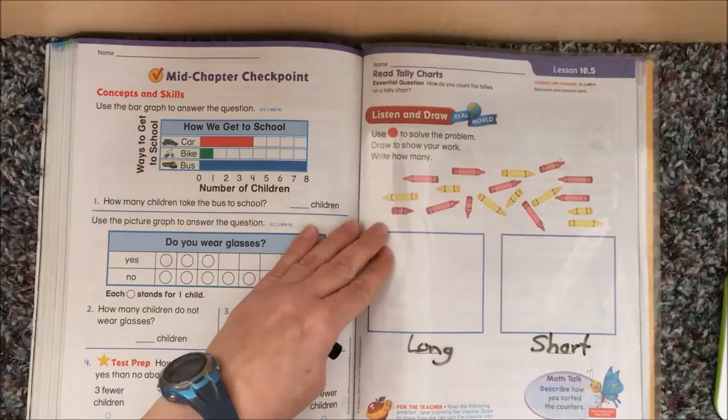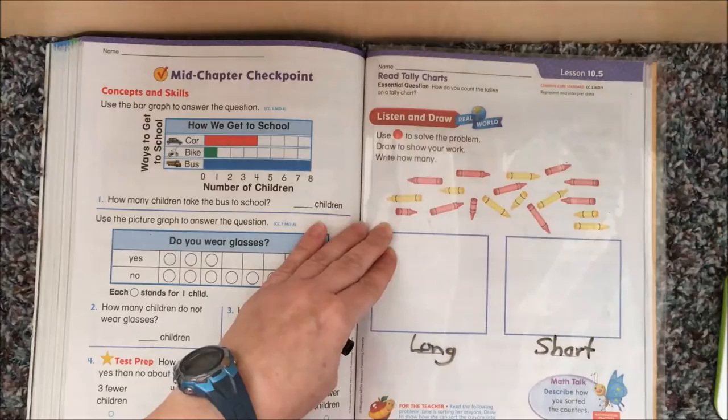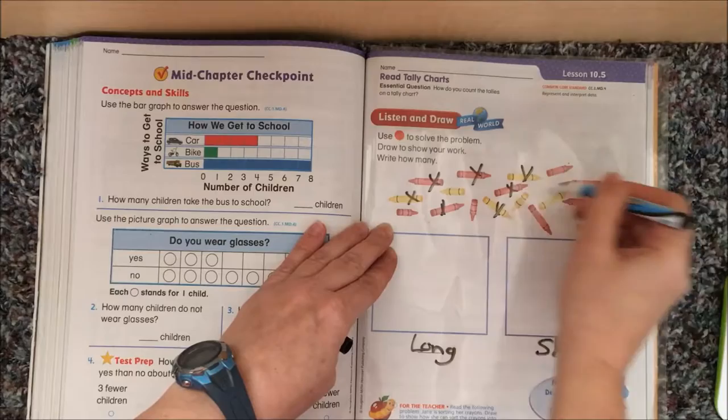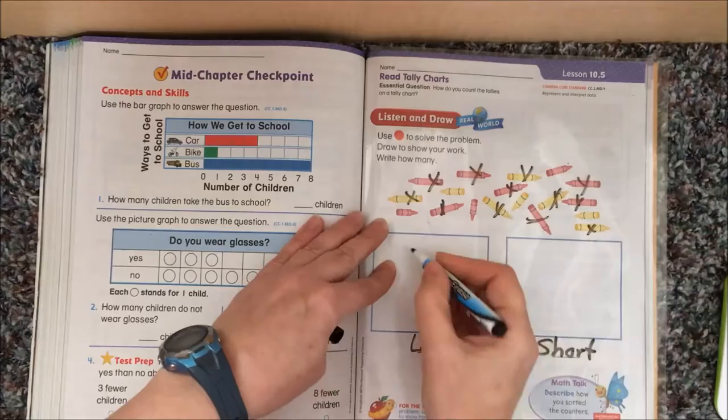If you did long and short, you could count them. You could use these to represent them. Or you could just mark them off one at a time. Or you could just count, but that might be kind of hard. Well, we could do it. Let's look: 1, 2, 3, 4, 5, 6, 7, 8, 9, 10, 11, 12. And then 1, 2, 3, 4, 5, 6, 7, 8, 9, 10, 11, 12.